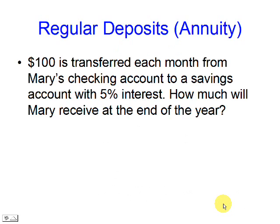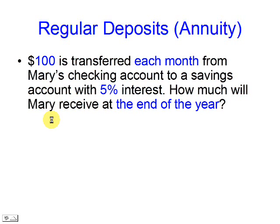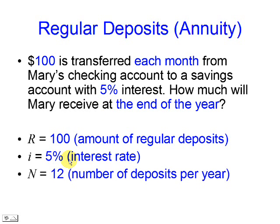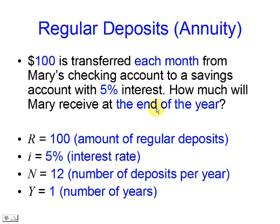This is an example. A hundred dollars are going to be transferred every month from one account to another. The interest rate is 5%. We want to know how much we'll receive at the end of the year. In this case, R is 100, I is 5%, N is 12, and Y is 1.